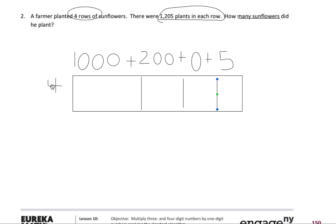So now I multiply each number. I'm going to start off by multiplying four times a thousand, which gives me four thousand. Four times two hundred, which gives me eight hundred. Four times zero is zero, and four times five is twenty.